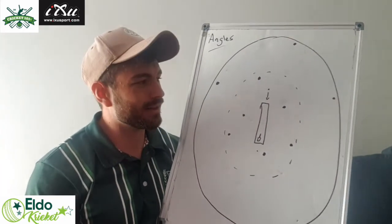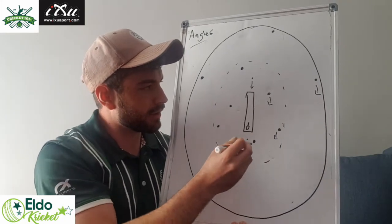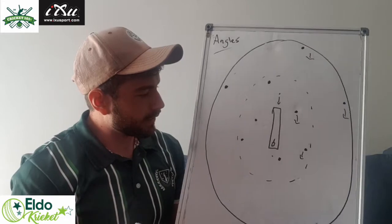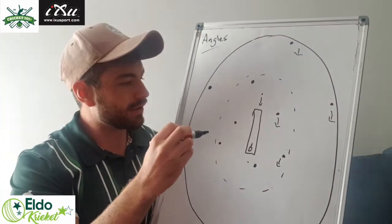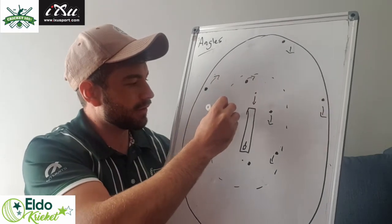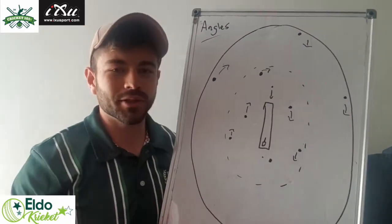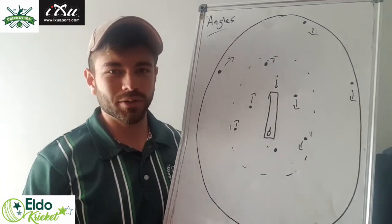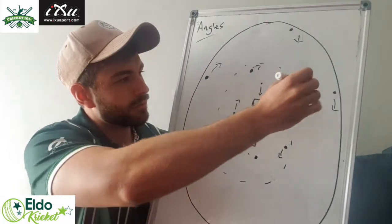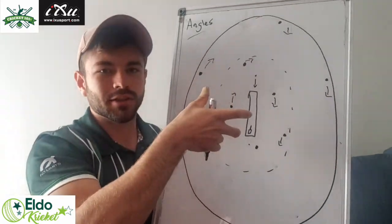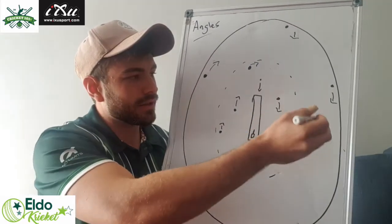On the offside everybody is going to need to move squarer, and on the leg side everybody is going to be moving straighter. The reason for this is the ball is spinning away from the batsman, creating width and more space for the batsman to play on the offside and less space on the leg side. So the field is moving clockwise this time - everybody moves clockwise - to give yourself the best chance of being in the place where the batsman is going to play the ball.